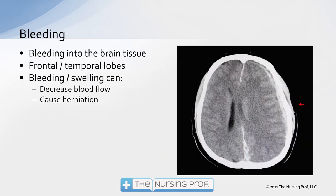If we're bleeding directly into the brain tissue itself, that's called an intracerebral bleed. This often affects the frontal and temporal lobes. Because we're bleeding right into the brain tissue, it can start to cause pressure on the brain and decrease blood flow — squeezing those blood vessels, decreasing blood flow, and can cause herniation. In this CT image, we can see an intracerebral bleed has completely closed off the ventricle on one side. You see that small black area on the left — that's the ventricle — and there's no matching spot on the right because it's completely closed off by pressure. The midline is also shifting toward the left as the brain herniates.